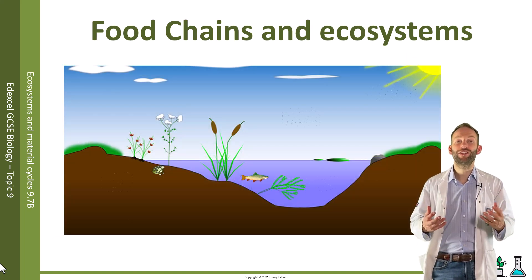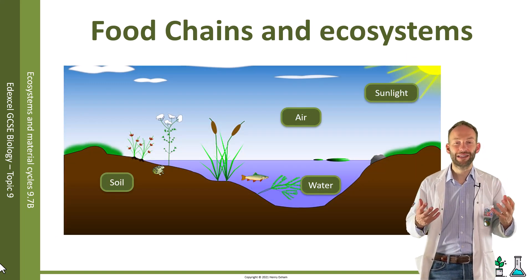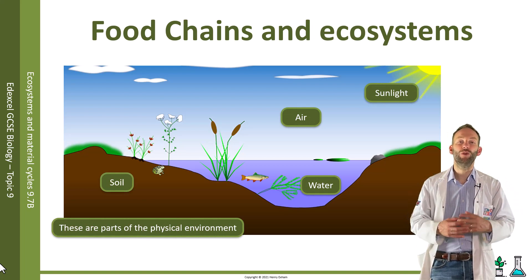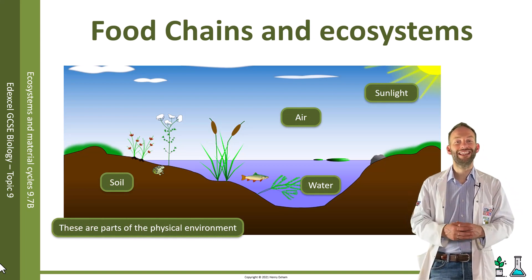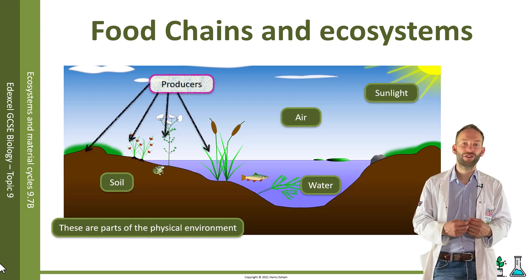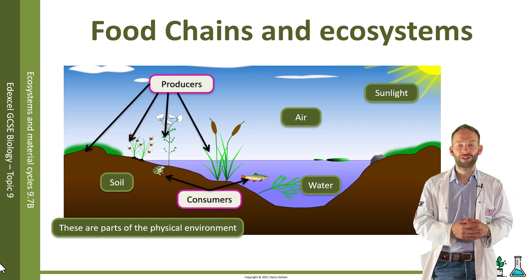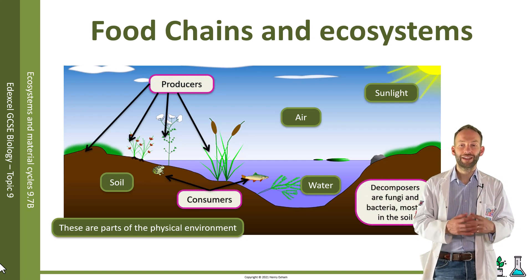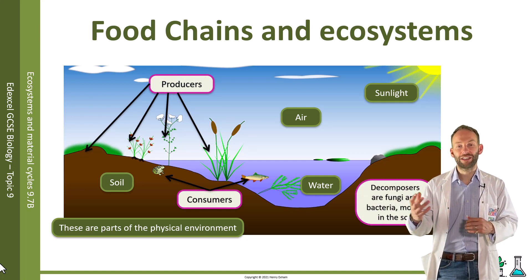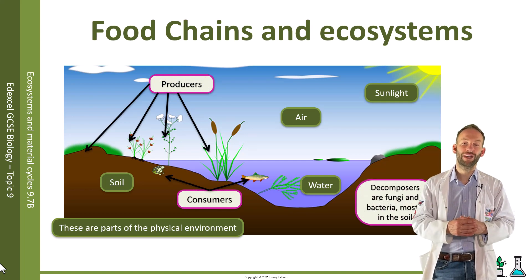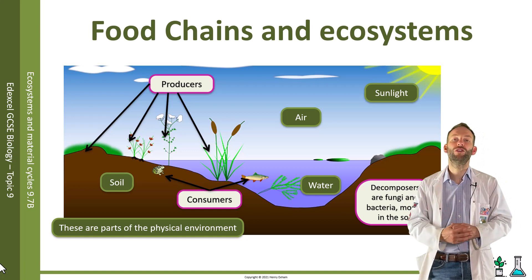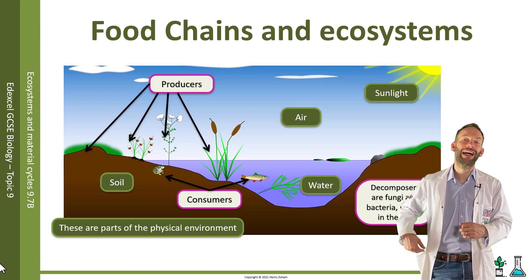This image here shows how a typical food chain fits more broadly into the ecosystem. You can see we've got producers, consumers, and they make up a food chain. We've also got the decomposers in the soil, and the abiotic factors.